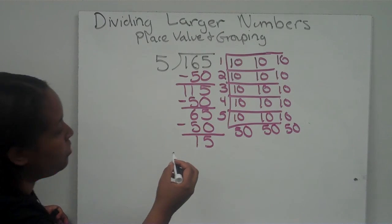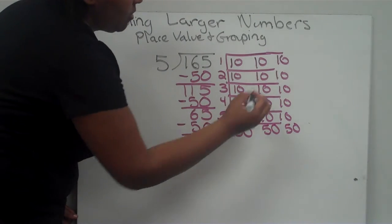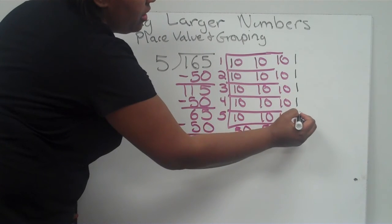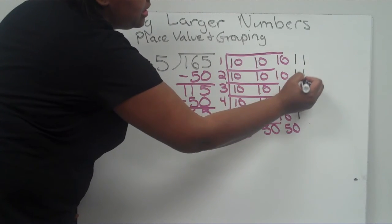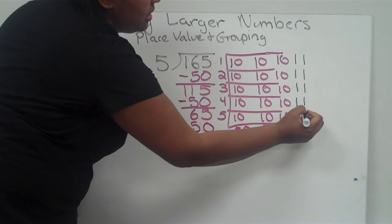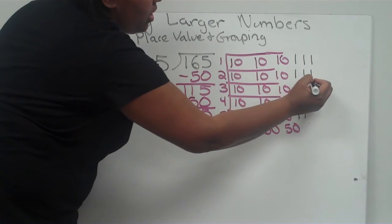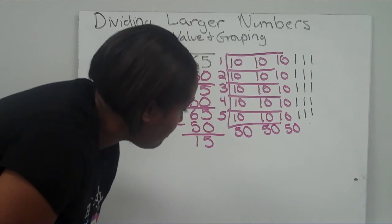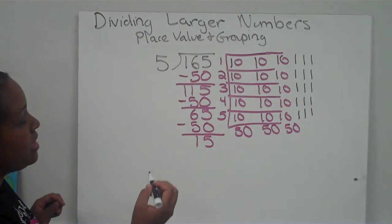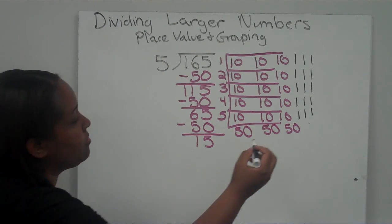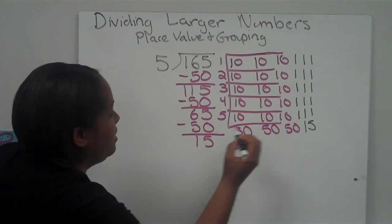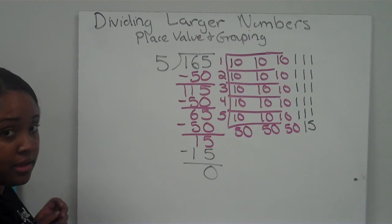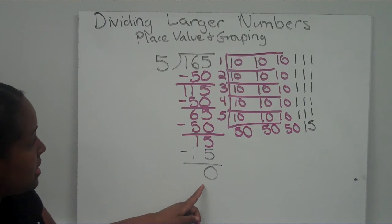Now I have 15 left. I'm going to pass out ones — 1, 2, 3, 4, 5, 6, 7, 8, 9, 10, 11, 12, 13, 14, 15. I was able to pass out my 15 ones evenly to each group, making 3 in each group. I put 15 here and subtract 15, and I got to 0. I am done dividing because I finally got to 0.